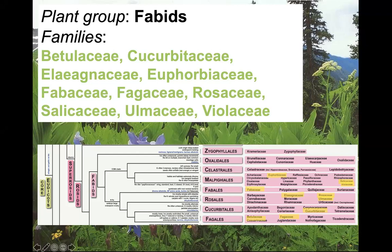Welcome everybody to our next lecture on the fabids. This is one of the two major groups of rosids, which is the large group of eudicots, primarily with free petals — not fused. Here are the families we're going to cover today. It can look like a lot, but there are two huge ones, the Rosaceae and the Fabaceae. The other ones are fairly modest in size, spread across many different orders.